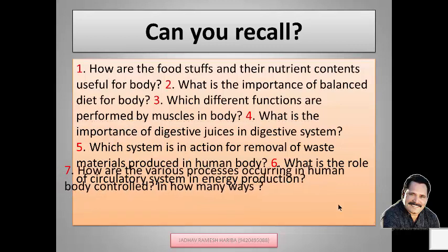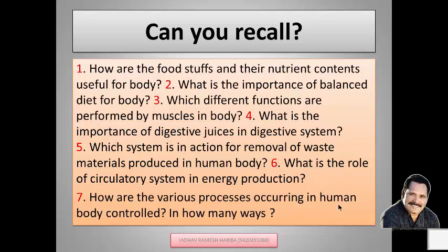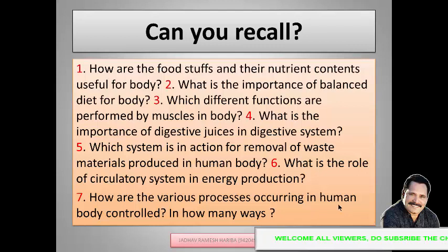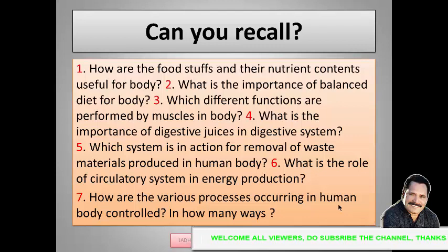How are the various processes occurring in our human body controlled? The various life processes in our body are controlled by the nervous system and by the chemical system. There are certain chemicals which regulate the life processes in our body.